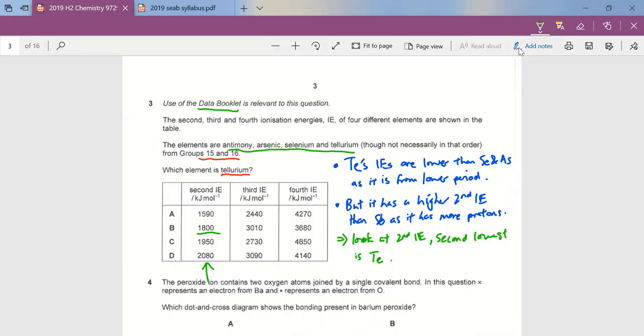Basically, the conclusion is that tellurium has lower second ionization energies than selenium and arsenic, but it has a higher second IE compared to antimony.